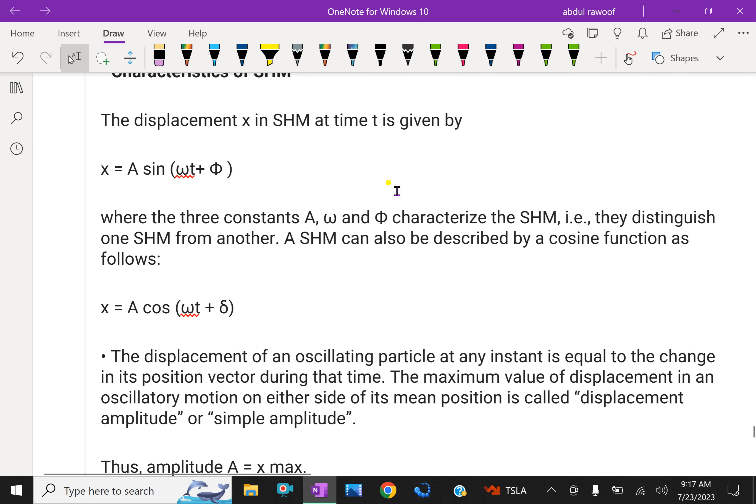Characteristics of SHM: The displacement x in SHM at time t is given by x = A sin(ωt + φ), where the three constants A, omega, and phi characterize the SHM. They distinguish one SHM from another. A SHM can also be described by a cosine function as follows: x = A cos(ωt + δ).